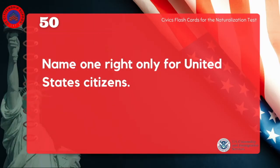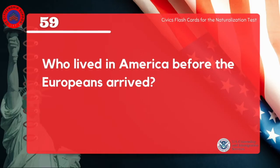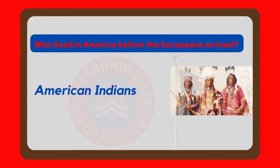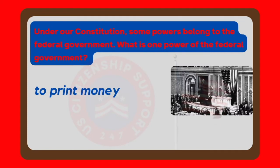Name one right only for United States citizens. Vote in a federal election. Who lived in America before the Europeans arrived? American Indians. Under our Constitution, some powers belong to the federal government. What is one power of the federal government? To print money.